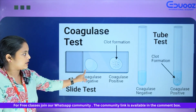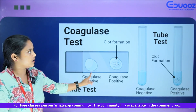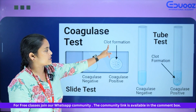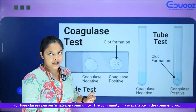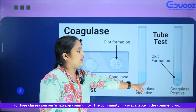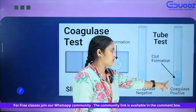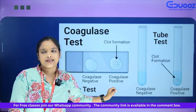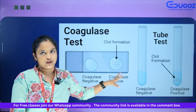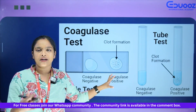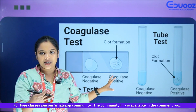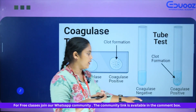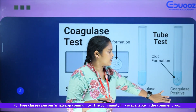If you have a coagulase negative result, it does not have clot formation. A coagulase positive result has clot formation in the test tube. The slide test is rapid. If you want a more definitive result, you can use the tube test for free coagulase.